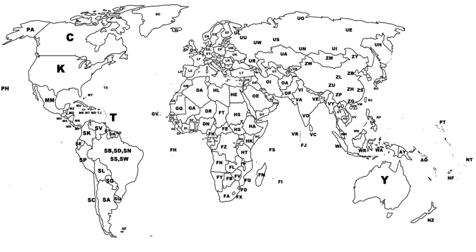The ICAO airport code, or location indicator, is a four-letter code designating aerodromes around the world. These codes, as defined by the International Civil Aviation Organization and published in ICAO document 7910, Location Indicators, are used by air traffic control and airline operations such as flight planning. ICAO codes are also used to identify other aviation facilities such as weather stations, international flight service stations, or area control centers, whether or not they are located at airports. Flight information regions are also identified by a unique ICAO code.